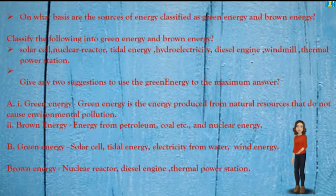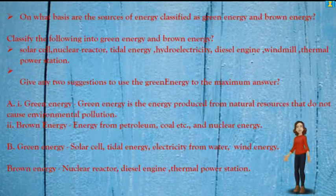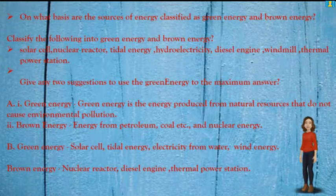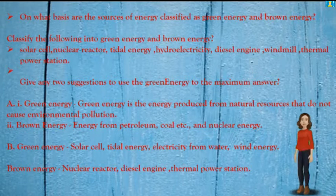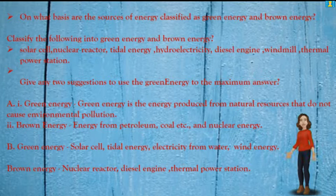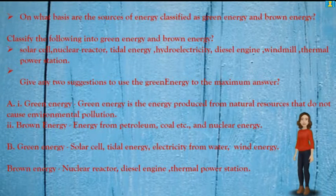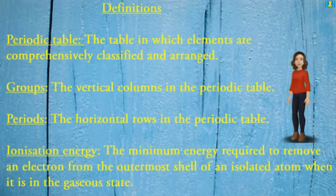On what basis are sources of energy classified as green energy and brown energy? Green energy is the energy produced from natural resources that do not cause environmental pollution. Brown energy comes from petroleum, coal, etc., and nuclear energy. Green energy examples: solar cell, tidal energy, hydroelectricity, wind energy. Brown energy examples: nuclear reactor, diesel engine, thermal power station.